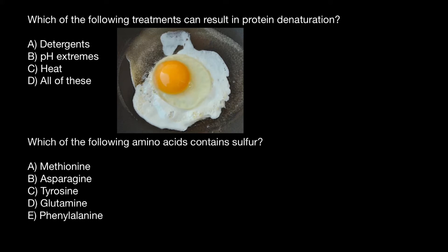And detergents — molecules that can be both positively and negatively charged; one part of the molecule can be polar, another can be non-polar. So when detergents are present, they also would disrupt the structure of proteins. So as you see, we have to choose answer D — all of the above treatments would result in protein denaturation.